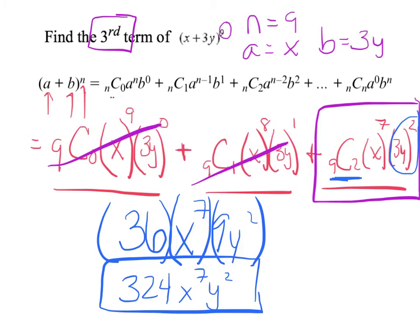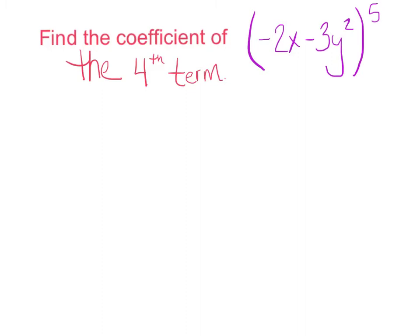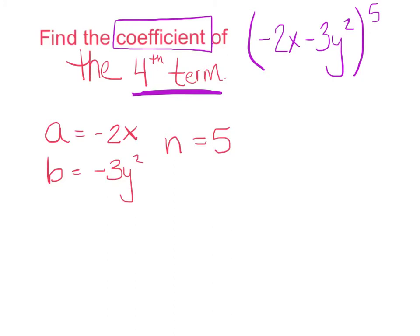Let's try one more example. Alright, so last example here. Find the coefficient of the fourth term. Now I just want you to highlight that word coefficient. And we'll talk about that in a moment, but my goal obviously is to get that fourth term. Alright, so use your expansion. My a is negative 2x. My b is negative 3y squared. And my n is 5. And again, I'm just following that formula from our formula sheet. So it starts with n choose 0. So 5 choose 0, a to the n, b to the 0. And you want the fourth term. So again, pause it, and let's just make sure we can get the same fourth term.